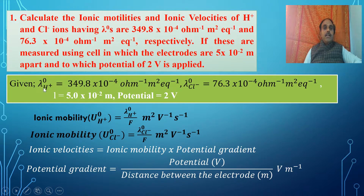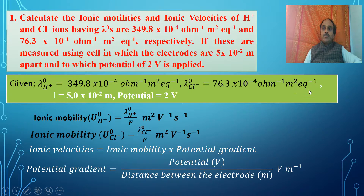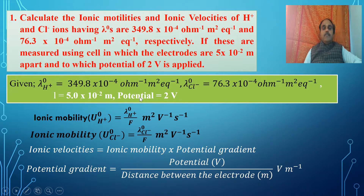The given data: λ° of H⁺ is 349.8 × 10⁻⁴ per ohm·meter² per equivalent. λ° of Cl⁻ is 76.3 × 10⁻⁴ per ohm·meter² per equivalent. The distance between the electrodes is 5.0 × 10⁻² meter, and the potential applied is 2 volts.